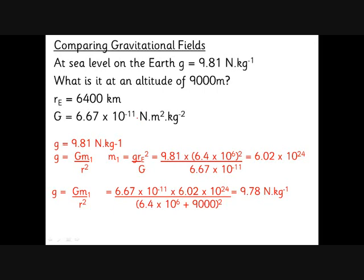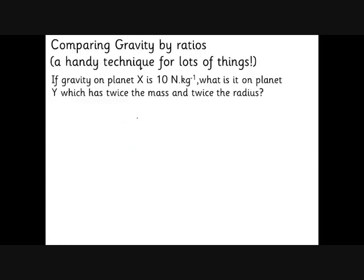Gravity will be a little bit weaker at the top of a very tall mountain — of course it will. This is all assuming that the earth is a uniform sphere, which we'll see later is not the case; the non-uniform nature does have some effect on gravity as you go around the earth.